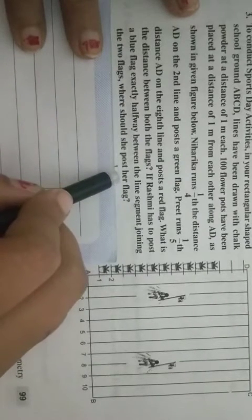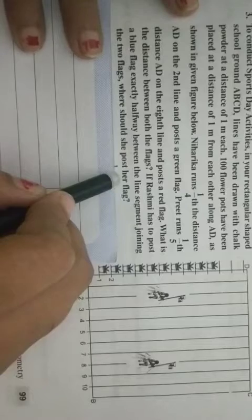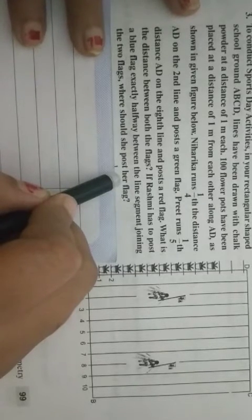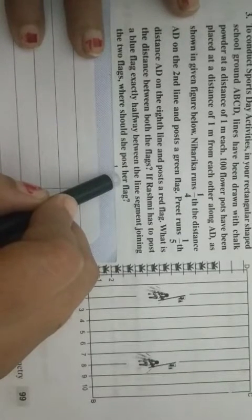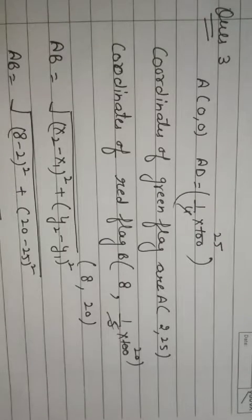The line segment joining the two flags, then where will she post her flag. So you have to tell where she will post her flag. So which formula will be used? Section formula. So let's start.